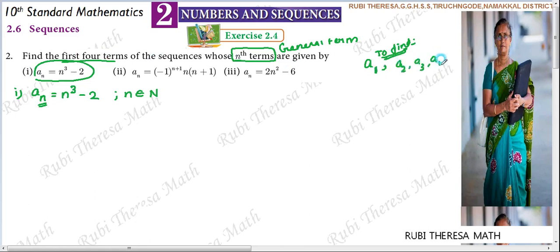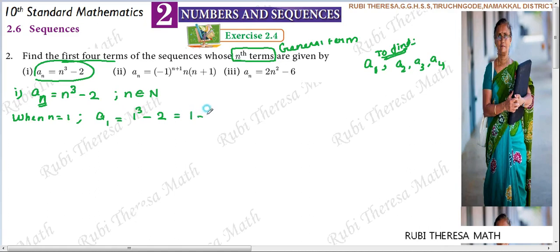The nth term is defined as n³ - 2. When n equals 1, A1 equals 1³ - 2. One cubed is 1, so 1 minus 2 gives us minus 1. So minus 1 is the first term of this sequence, defined by n³ - 2.